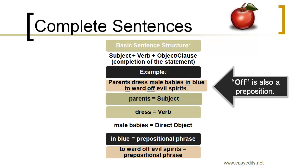So in this sentence, the subject is 'Parents' and the verb is 'dress.' Technically, 'Parents dress male babies' is a complete sentence — you have 'parents' as the subject, 'dress' as the verb, and 'male babies' as the object, or the thing receiving the action. 'Male babies' is the direct object. 'In blue' is one prepositional phrase, and 'to ward off evil spirits' comprises another prepositional phrase. Remember: you will never find the true verb or the subject in a prepositional phrase.